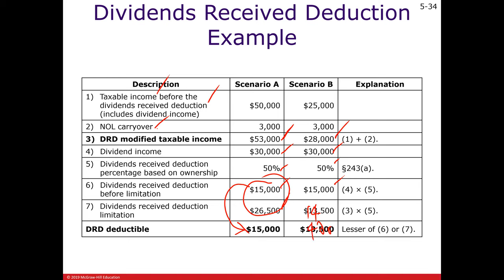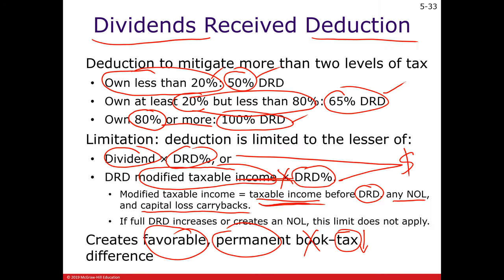It's 50% of the $28,000 modified taxable income. Another thing about the taxable income percentage limitation is that it doesn't apply if subtracting the dividend received deduction would give you a taxable income of zero or result in an NOL. If you subtract out the dividend received deduction and it creates a loss or a bigger loss, then you get to deduct the full 50%, 65%, or 100% of the dividend without being limited by a percentage of the modified taxable income.